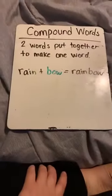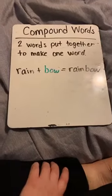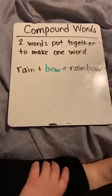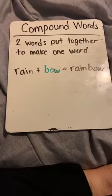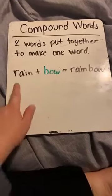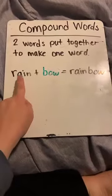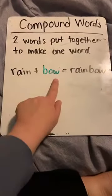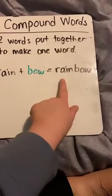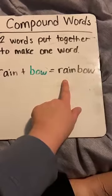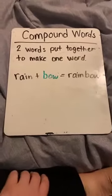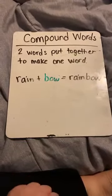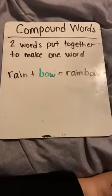Today we're going to talk about compound words and what those are. Compound words — remember? They're two words put together to make one word. So like in this word I have, I have rain plus bow. You make the word — rainbow. Very good. So a compound word is two words put together to make one word.